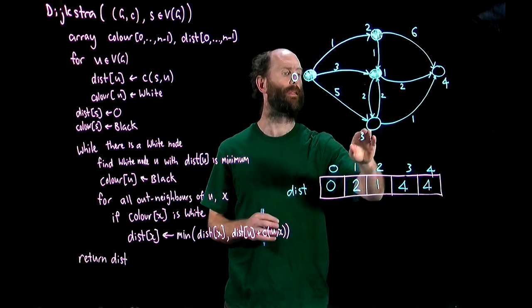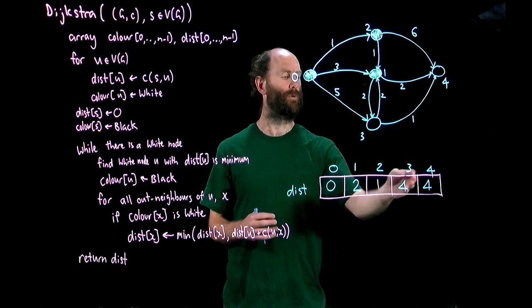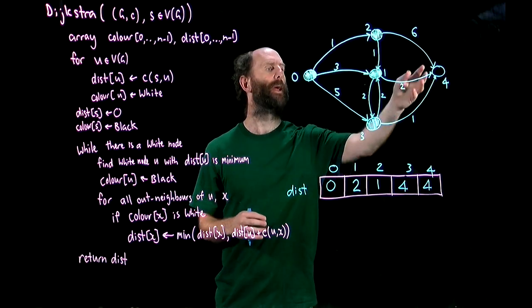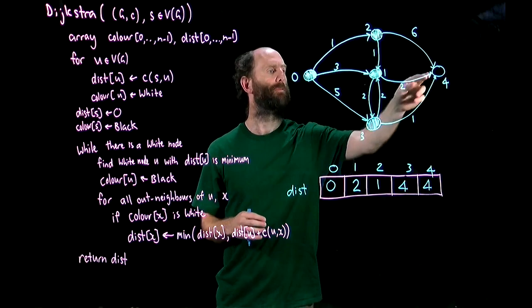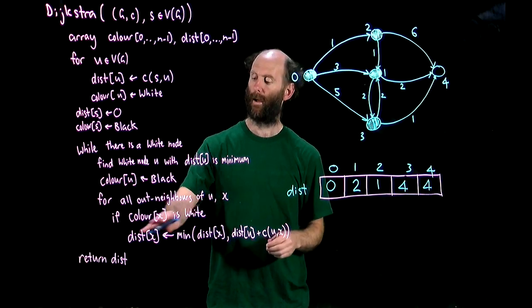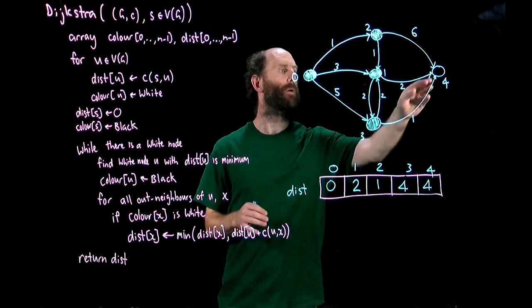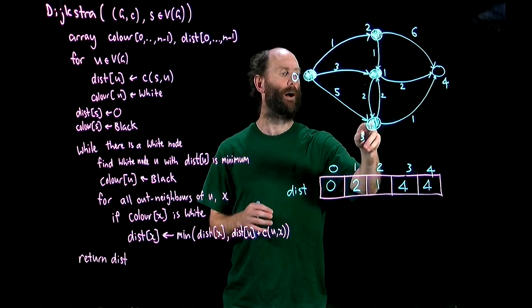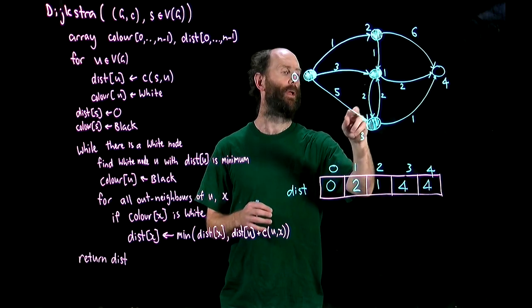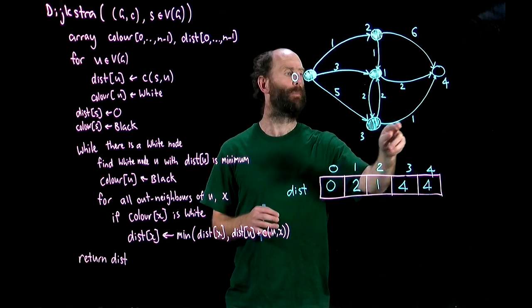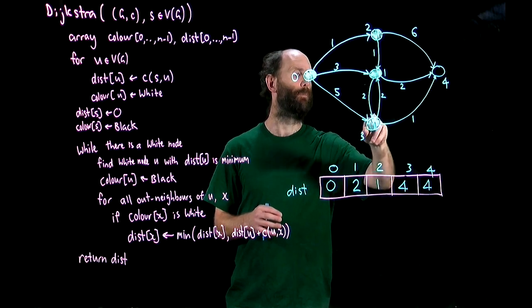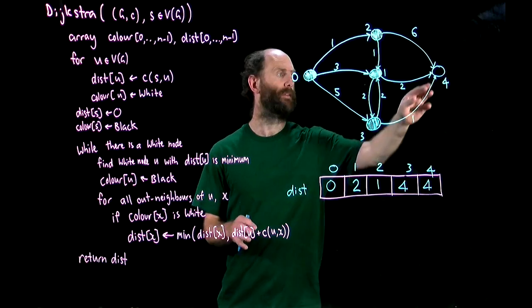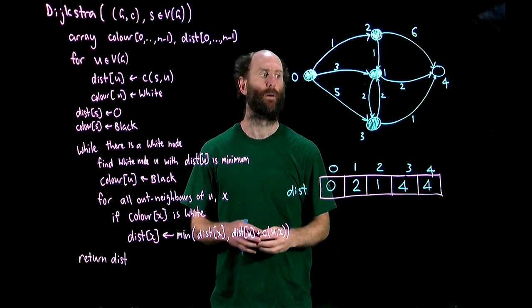Again we choose either three or four which are the only white nodes. We'll choose three as it's got the lower index. Add it to the black set. Look at its out neighbors. It has out neighbors one and four. We're only interested in white out neighbors so we'll ignore one. We'll look at four. The distance to four is currently four. The distance to three is also four and so using a path through three plus this arc would cost four plus one which is five which is greater than four so we'll leave the dist of four as it is and we're all done.